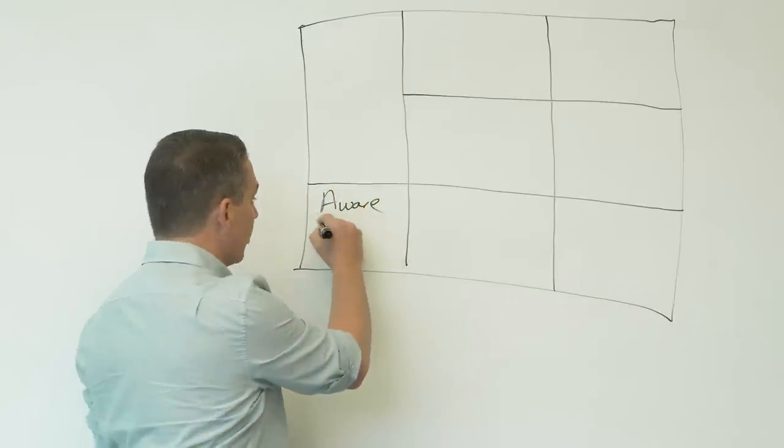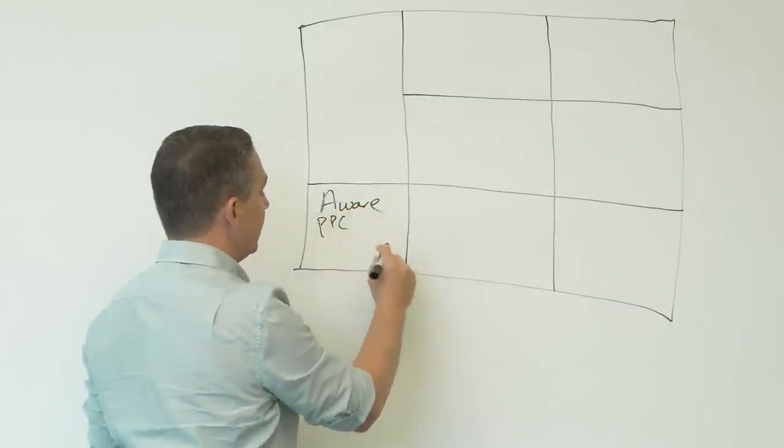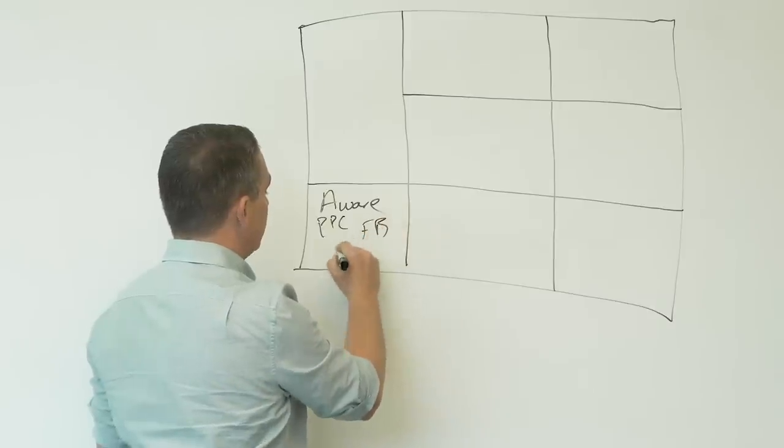And you could go in and write them all in. So you could write in PPC, you could write in Facebook, you could write in search. Get down to the campaign level. You get as granular as you want. Or what I recommend doing, if you've got more space to work with.